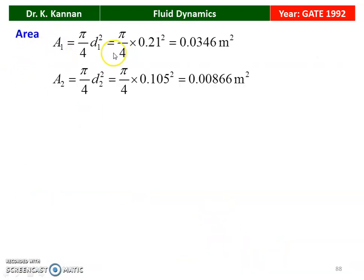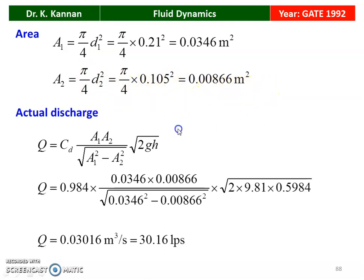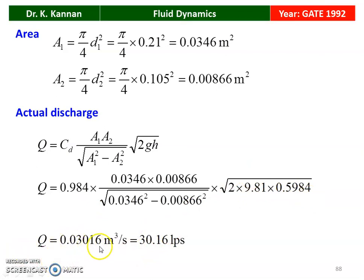Area of the pipe: A1 = (π/4)·D1² = (π/4)×0.21² = 0.0346 m². Area of the throat: A2 = (π/4)·D2² = (π/4)×0.105² = 0.00866 m². Actual discharge: Q = C_D × (A1·A2)/√(A1² − A2²) × √(2gH) = 0.984 × (0.0346×0.00866)/√(0.0346²−0.00866²) × √(2×9.81×0.5985) = 0.03016 m³/s = 30.16 liters per second.